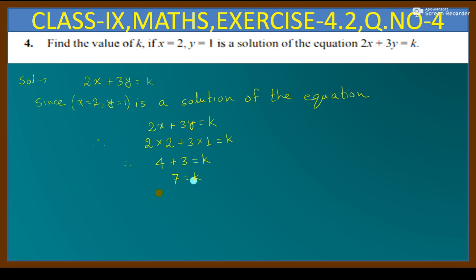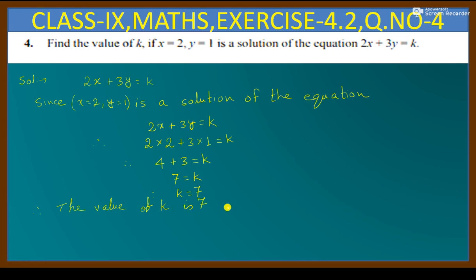Therefore, the value of k is equal to 7, if x is equal to 2 and y is equal to 1 is a solution of the equation 2x plus 3y is equal to k. This is the answer.